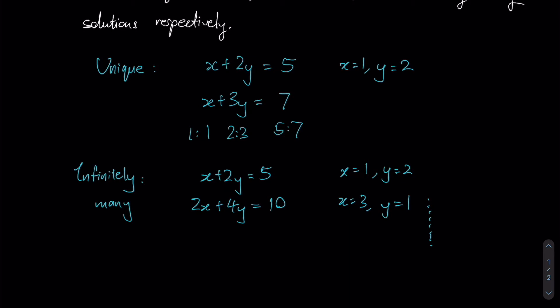x could be 1, y could be 2; x could be 3, y could even be 1, so on and so forth. It pretty much extends towards infinity. Why is this so? Again we're going to use the idea of the ratios of our coefficients. Over here between x and 2x the ratio is 1 is to 2, 2y and 4y the ratio is 1 is to 2, and 5 and 10 the ratio is 1 is to 2 as well.